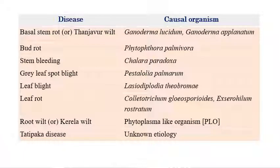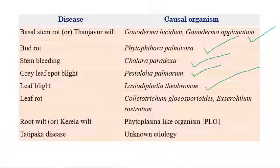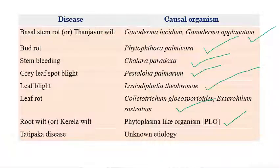The important diseases in coconut are: Basal Stem Rot or Tanjavur Wilt, caused by Ganoderma lucidum or Ganoderma applanatum; Bud Rot, caused by Phytophthora palmivora; Stem Bleeding, caused by Chalara paradoxa; Gray Leaf Spot Blight, caused by Pestalotiopsis palmarum; Leaf Blight, caused by Lasiodiplodia theobromae; Leaf Rot, caused by Colletotrichum gloeosporioides or Exserohilum rostratum; Root Rot or Kerala Wilt, caused by a phytoplasma-like organism; and Tatipaka Wilt, which has unknown etiology, meaning the causal organism has not been identified so far.